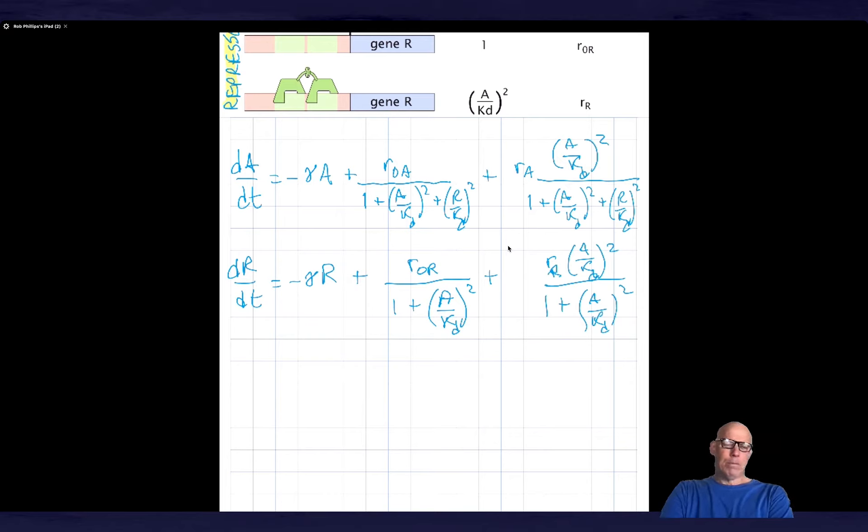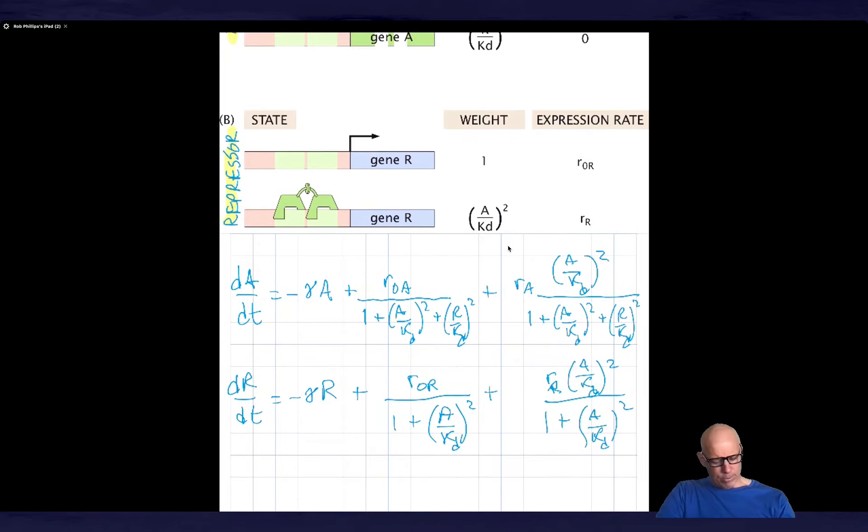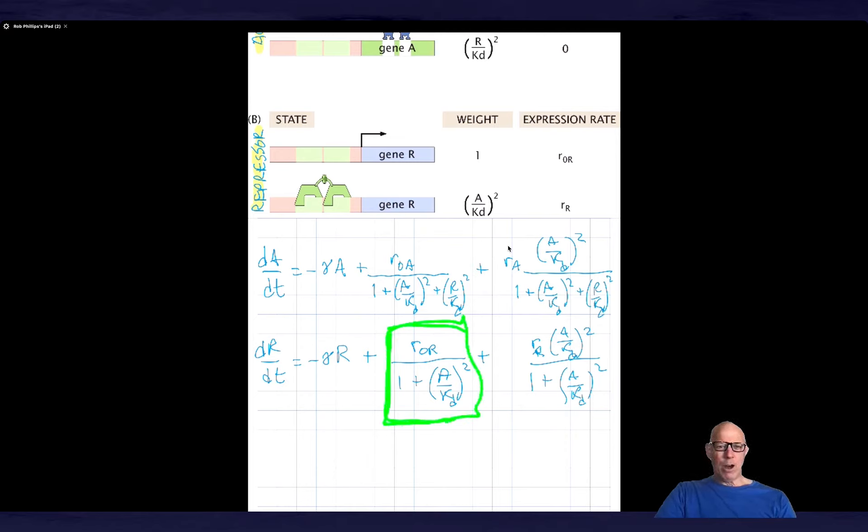So those are our two equations. That I did basically by scratch and sniff. I exploited things we've already been doing for a while now in the course, which is we write down the states and weights. The states and weights tell us the probability of the different states. So let's look at the latter of these, so we can see the diagram and the equation at once. So this is the state that produces at a rate R0R, and the probability of that state is given by 1 divided by the sum over both states, which is this. So the probability of being in that state is 1 over 1 plus A over KD squared. So basically what I'm doing is I'm writing R0R times P0. So we constantly are using the same idea, which is we have a rate, and then we multiply by the probability of being in the state that has that rate. And similarly, the second one, the probability of the second state is this quantity, A over KD squared, divided by the sum over both states.